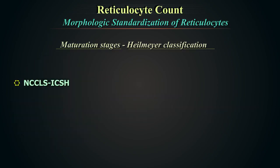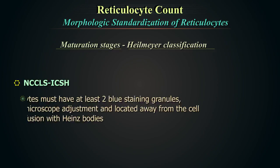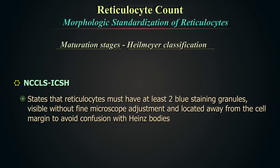The NCCLS-ICSH definition states that reticulocytes must have at least two blue-staining granules visible without fine microscope adjustment and located away from the cell margin to avoid confusion with Heinz bodies.